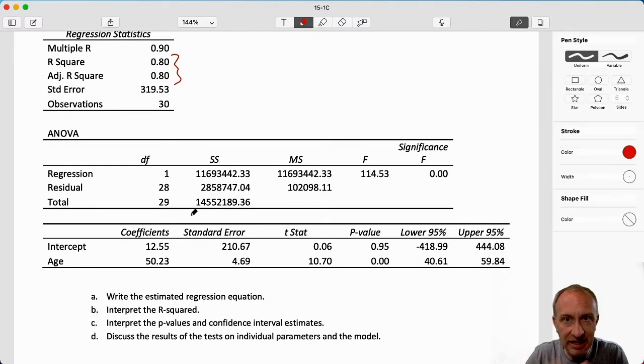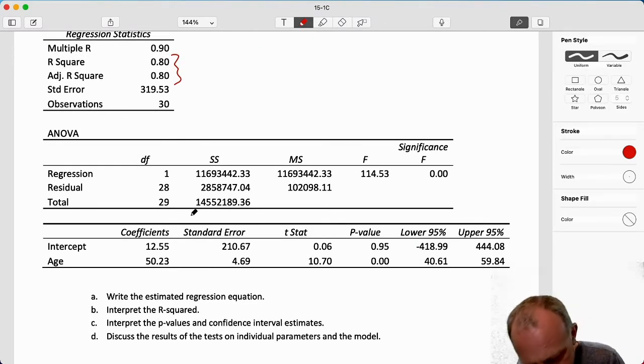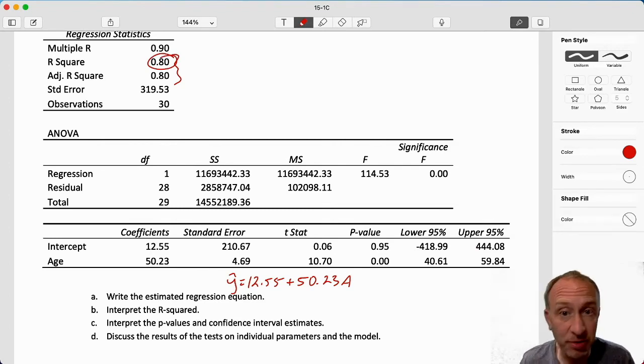We have our estimated equation is 12.55 plus 50.23 age. Our r-squared is 0.8. This tells us that the person's age captures 80% of the variation in their salary. Don't forget that dependent variable, that was salary, measured in thousands of dollars. Age is their age measured in years.